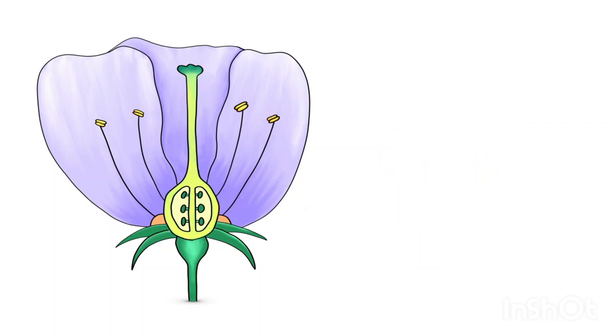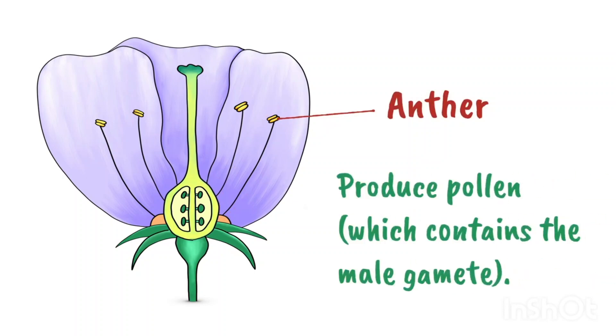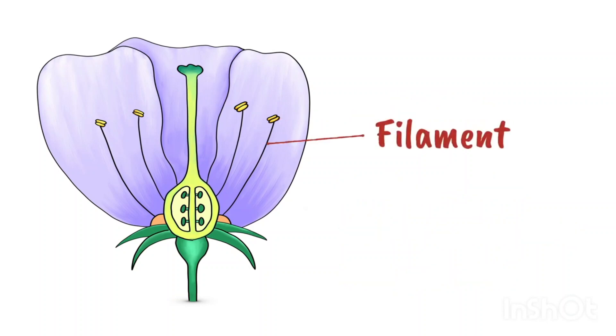At the top of each stamen is the anther. The function of the anther is to produce pollen which contains the male gamete, the male reproductive cell. This long thin structure is called the filament and it supports the anther.